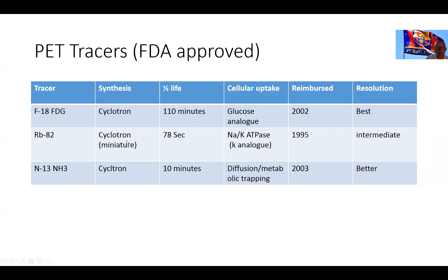Rubidium is probably the most commonly used stress perfusion agent for cardiac PET. It was previously dependent on on-site cyclotrons given its very short half-life of approximately 75 seconds; now miniature cyclotrons are available. It is a potassium analogue similar to thallium, using the sodium-potassium ATPase to enter the cell. It has been approved since 1995 and has intermediate resolution.